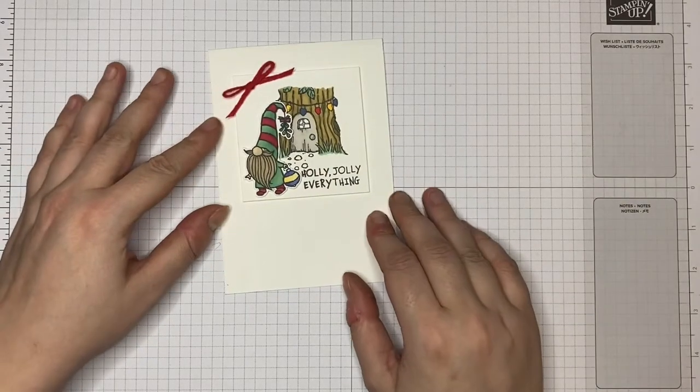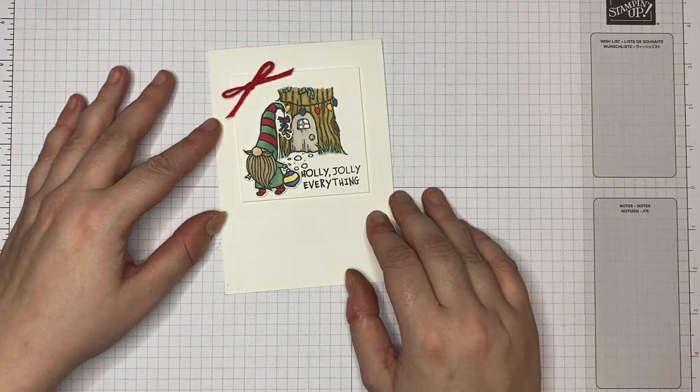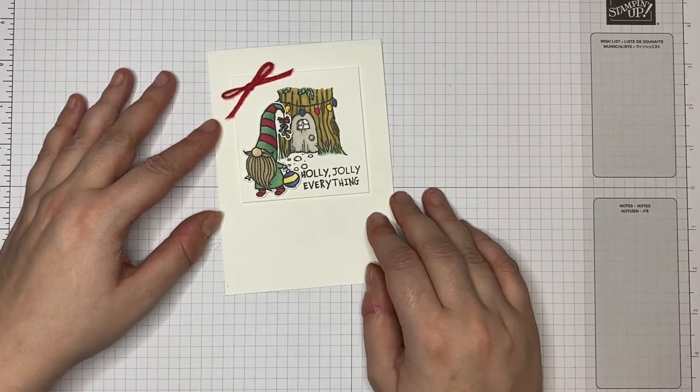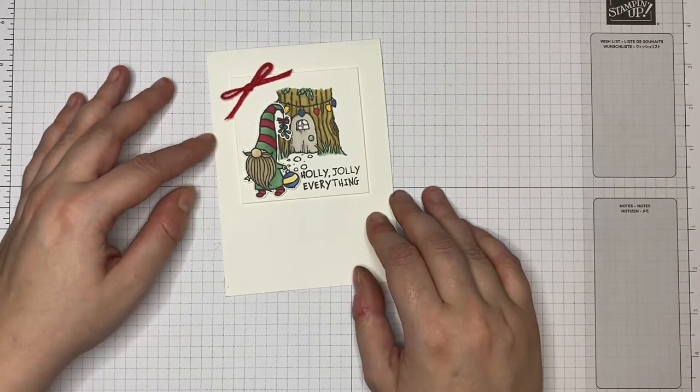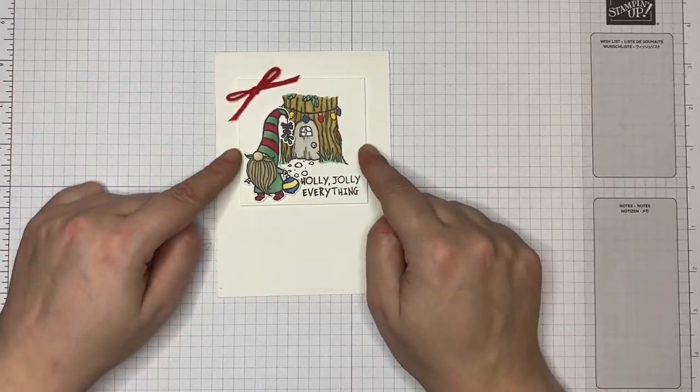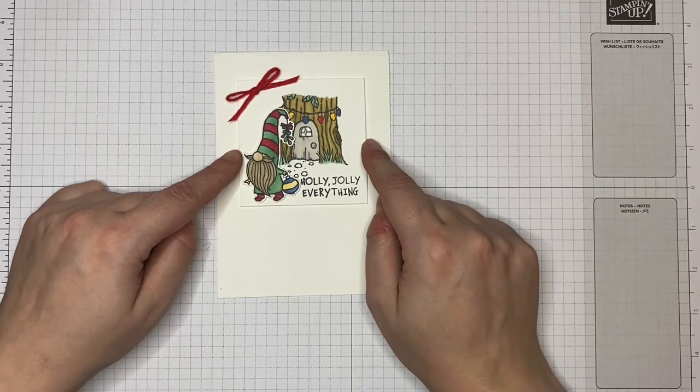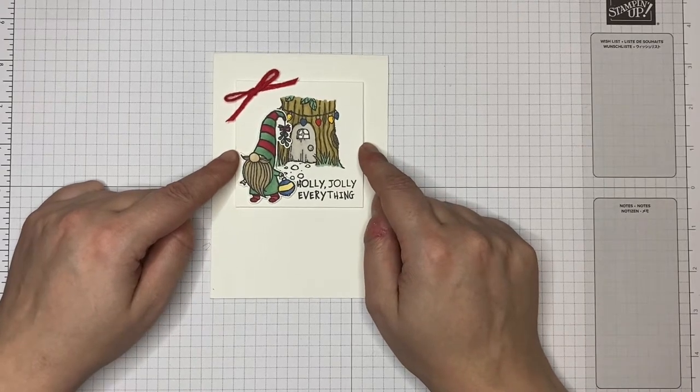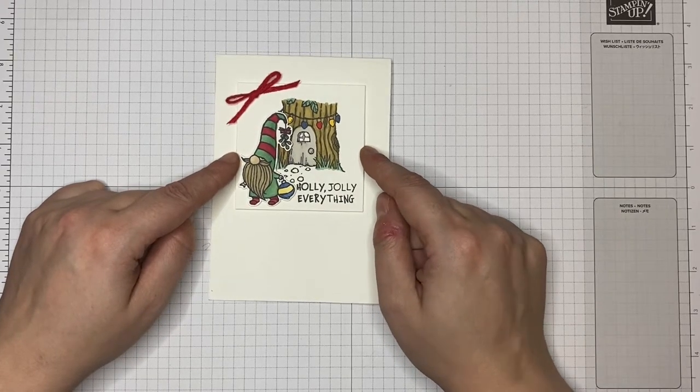Today we will be making this card. What is my Simple Sunday series? Simple Sunday is where I challenge myself to use a white card base and a 3x3 topper to showcase a single stamp set or die set within the Stampin' Up current catalog.